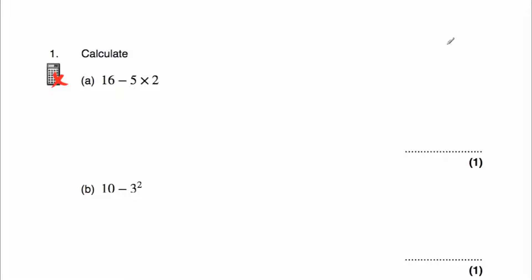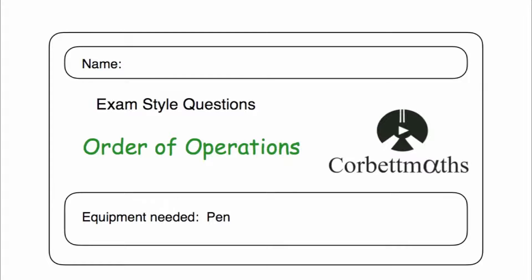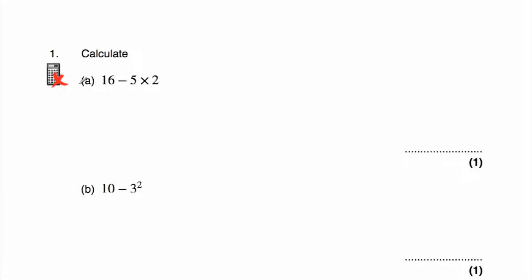So question one is a non-calculator question. Question a says: work out 16 take away 5 multiplied by 2. Whenever we're working out calculations, it's very important we use the correct order of operations. We do brackets first, then orders — that's squares, square roots, cubes, cube roots — then divisions and multiplications, then additions and subtractions. Some people call those indices.